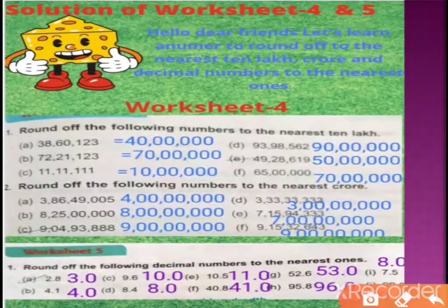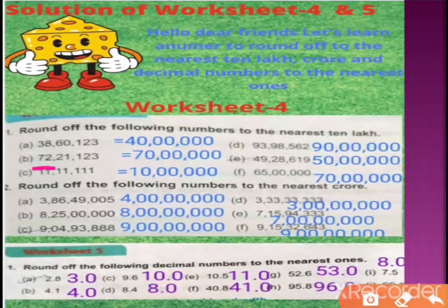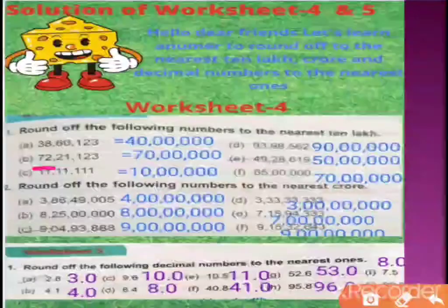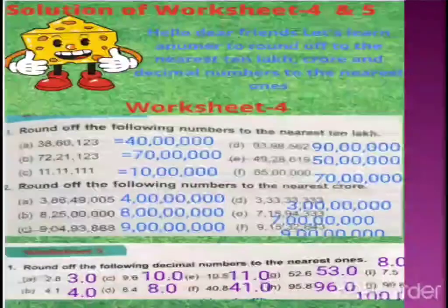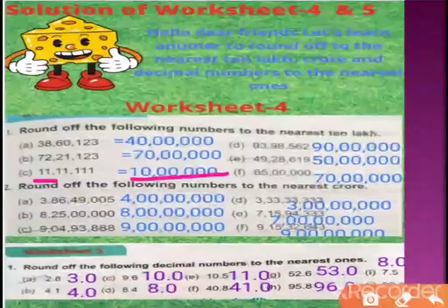उदाहरण देखते हैं: 38 lakh है, तो किस lakh के ज्यादा close है — 40 या 30? यह 40 के close है, so answer will be 40 lakh. Next: यह 72 lakh something है, तो 72, 70 के ज्यादा close है बजाए 80 के, so answer will be 70 lakh. Next: 11 lakh, 11 lakh is close to 10 lakh in spite of 20, so answer will be 10 lakh।